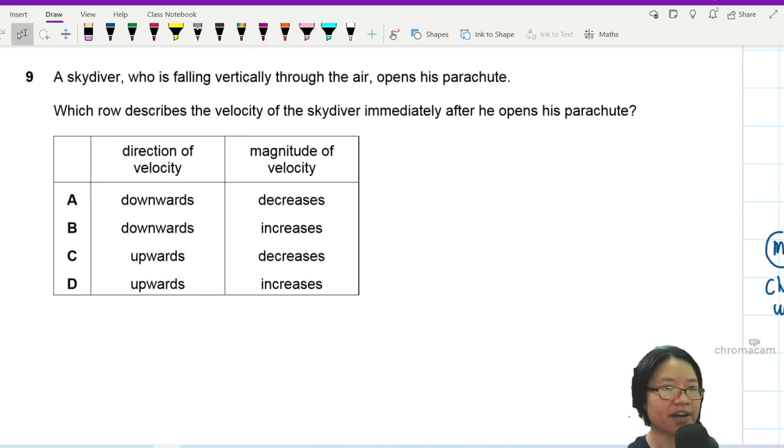Question nine: A skydiver who is falling vertically through air opens his parachute. Which role describes the velocity of the skydiver immediately after he opens his parachute? There's a keyword here: immediately after he opens his parachute.